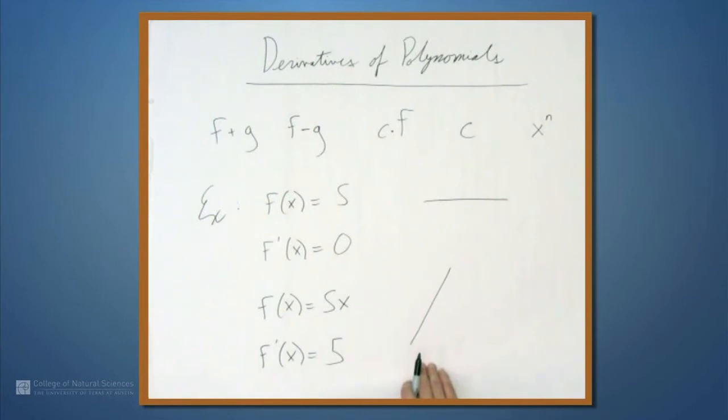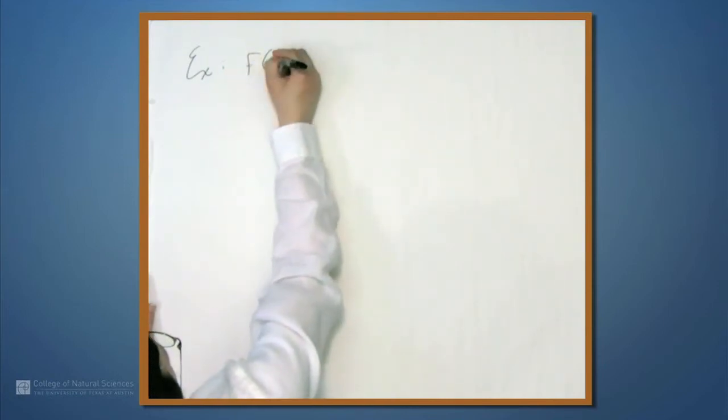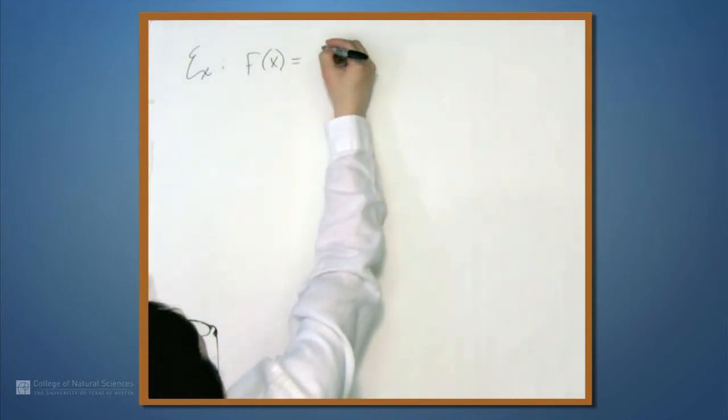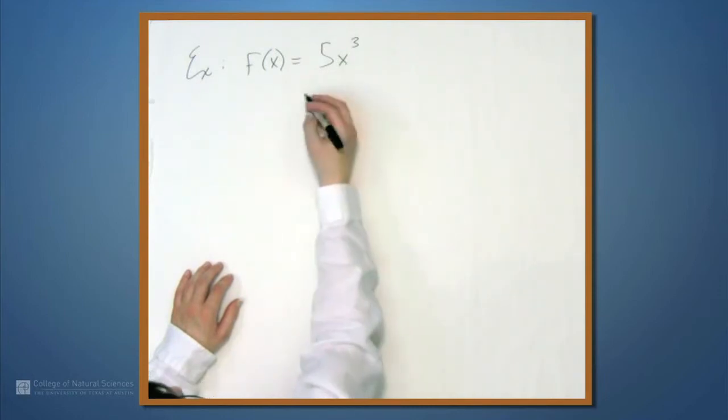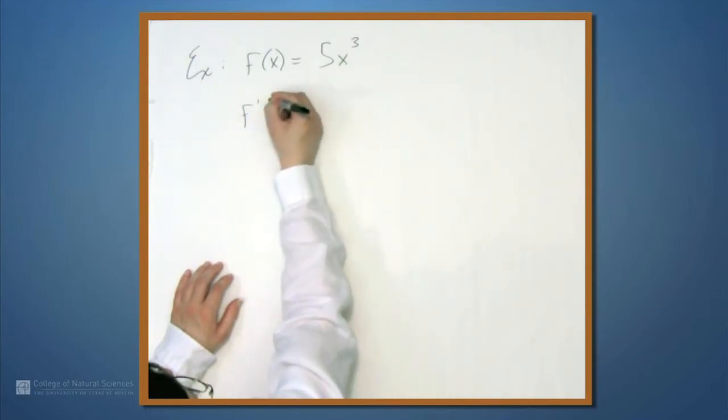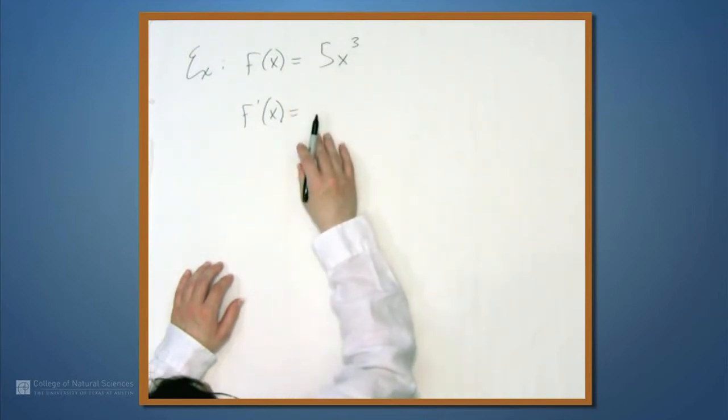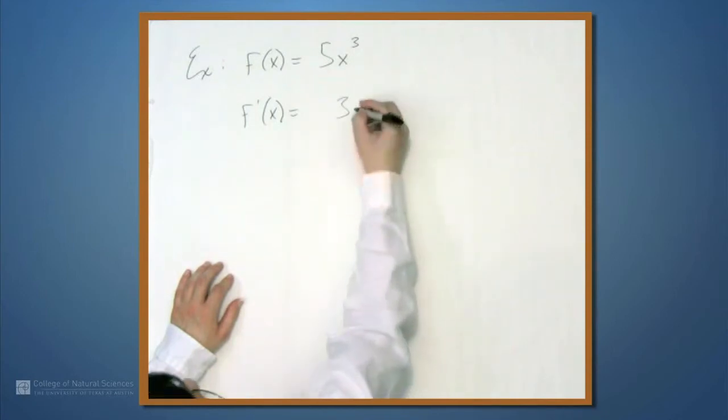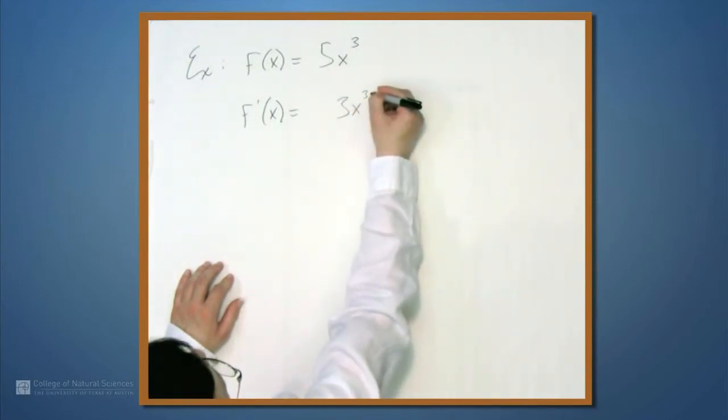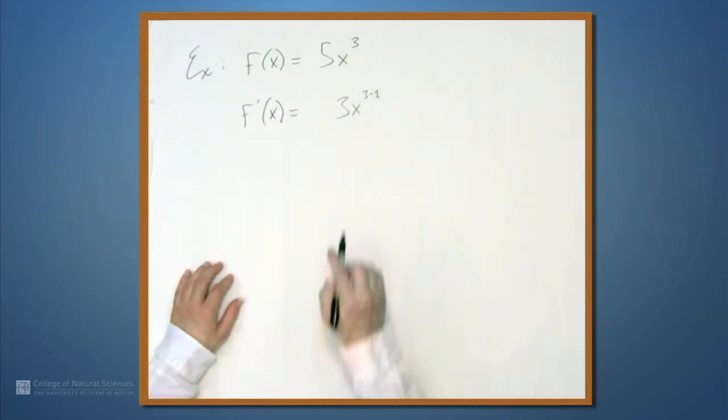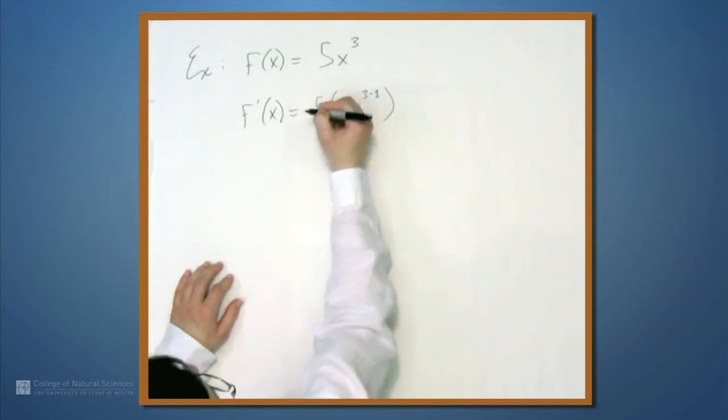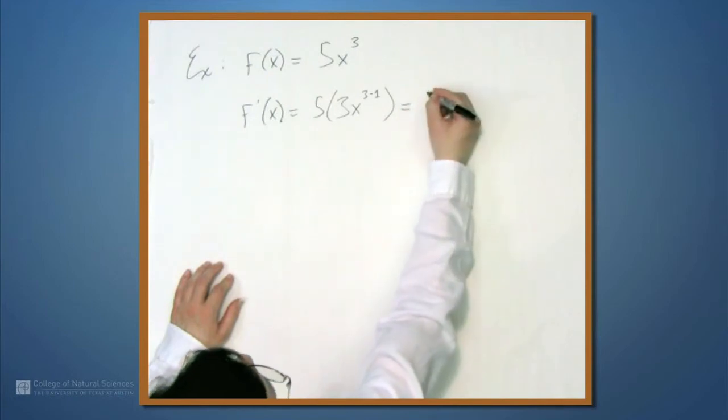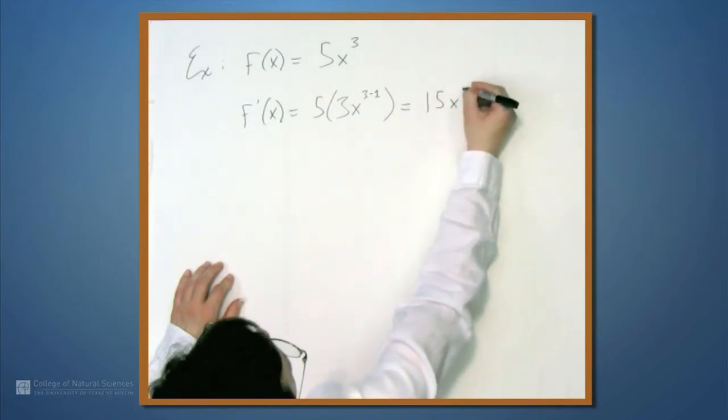Let's look at one more example along these lines. Now let's set f of x equal to 5x cubed. Now we're going to involve the power rule. So the power rule says that to find the derivative of x cubed, the 3 comes down out front, so you have 3 times x, and then in the exponent you subtract 1. So 3 times the quantity x to the 3 minus 1. But of course we can't forget the 5, so the 5 is sitting here out front. So this simplifies to 15x squared.